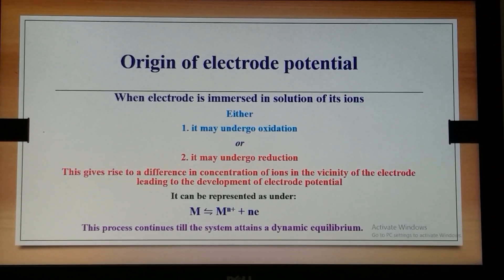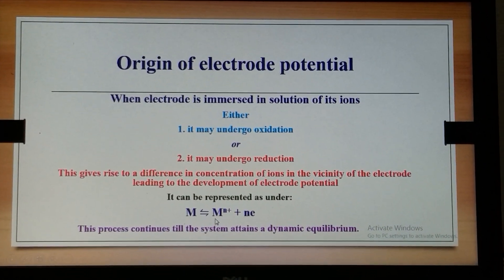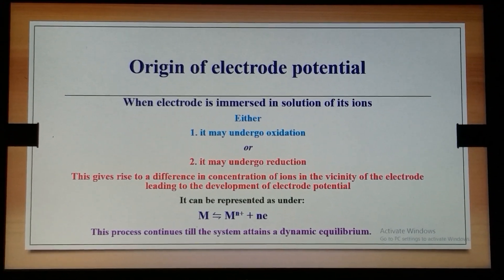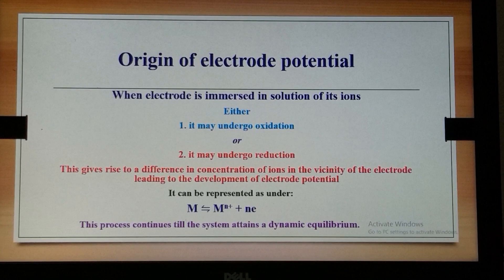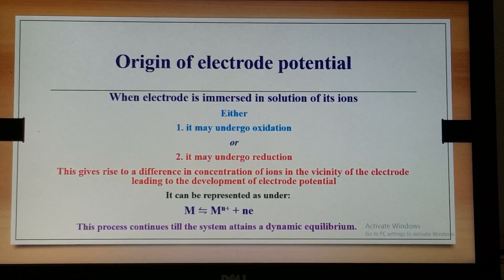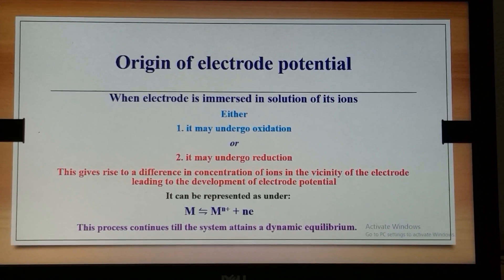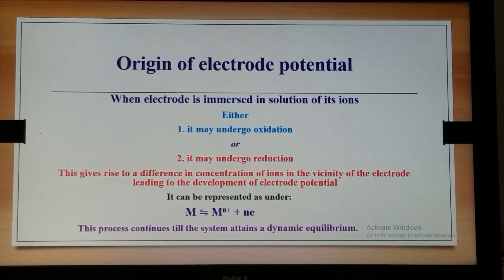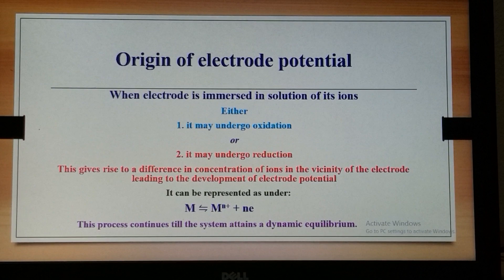The reaction which takes place is represented here. The metal either dissolves to produce electrons, or the metal ions accept the electrons and get reduced at the cathode as metal. This process continues till a dynamic equilibrium is attained.